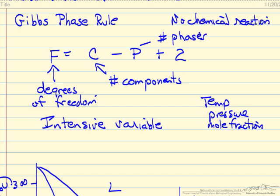So if we determine that the degrees of freedom is 2, that means we can specify two things, for example temperature and pressure, and then the system is completely defined.